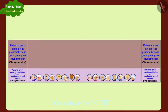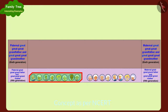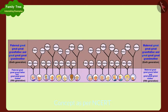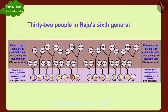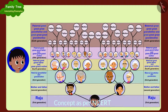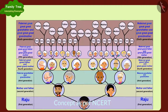To make Raju's sixth generation, we need to add the parents of his maternal great-great-grandfather and great-great-grandmother, and the parents of his paternal great-great-grandfather and great-great-grandmother. In this way, there will be 32 people in Raju's sixth generation. How many great-grandfathers and great-grandmothers does my father have, children?